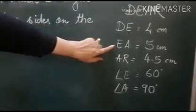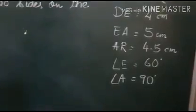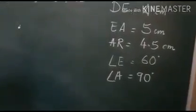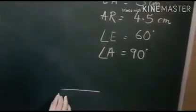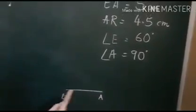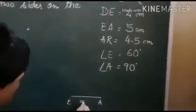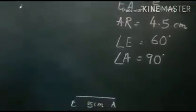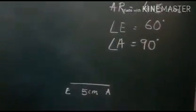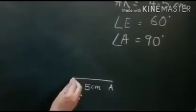EA we have to draw. First let's draw the rough figure. We will draw EA. Why we have chosen EA? Because angle E is given and angle A is given. You have to draw a line 5 cm long.